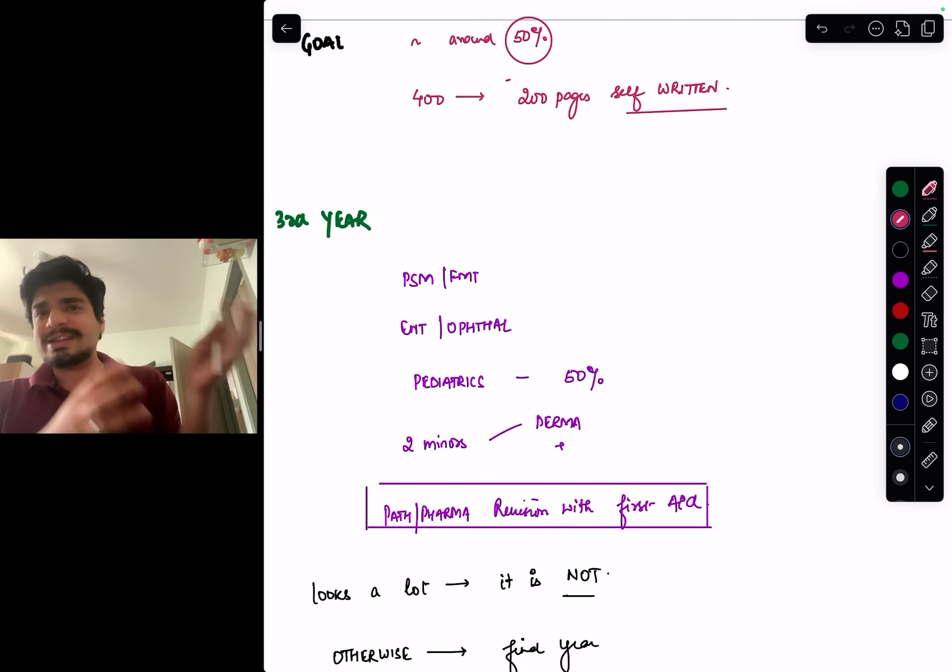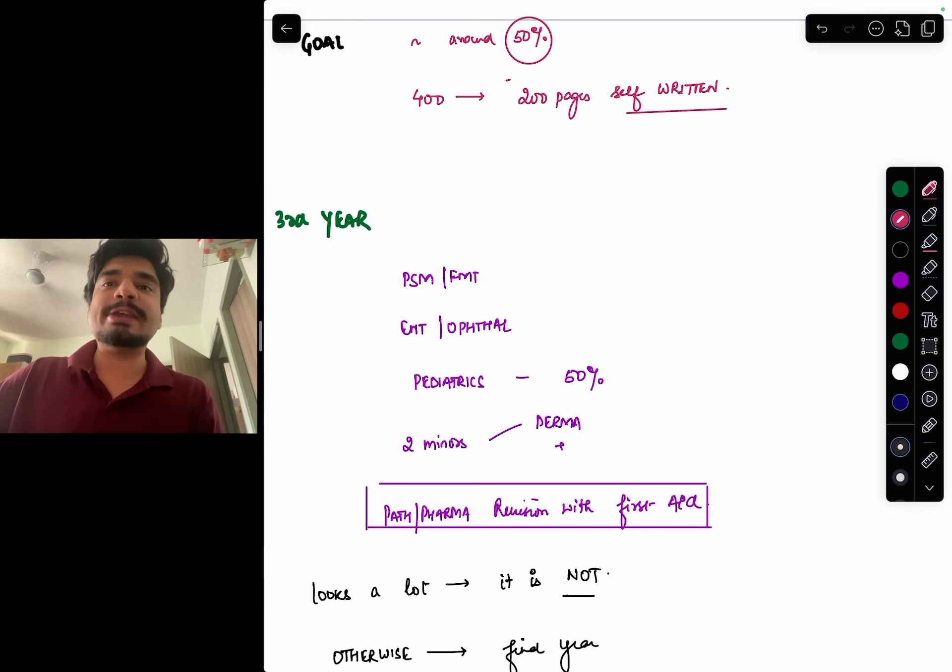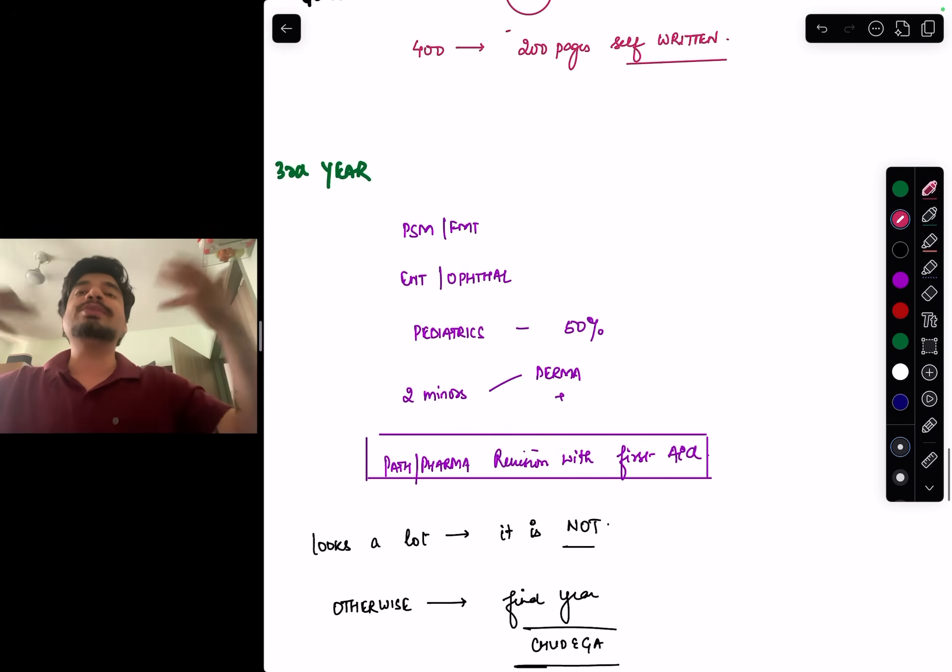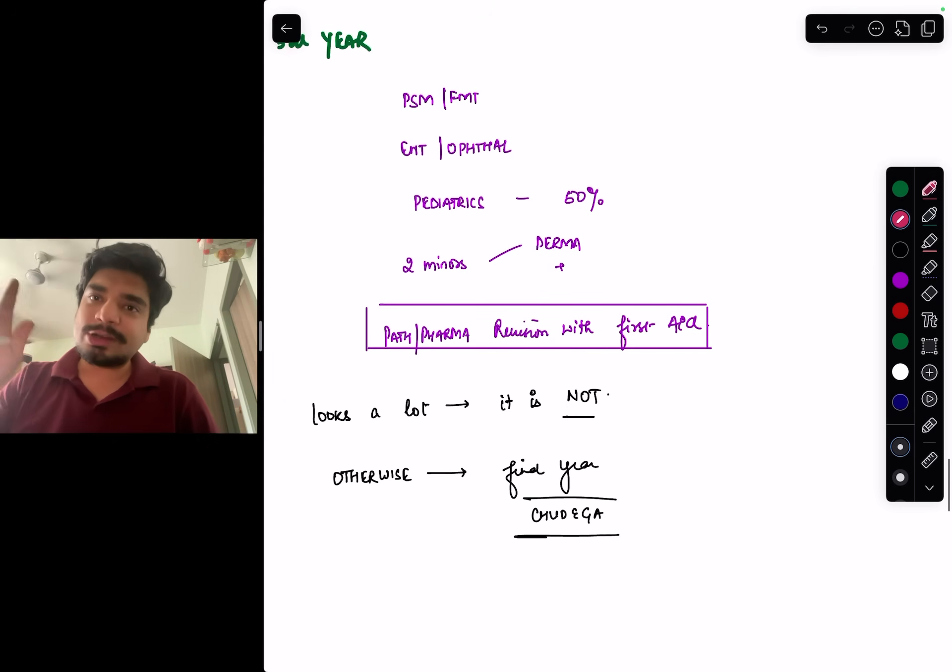So, if you have 400 pages of pediatrics, try to make it 200 pages. If you have 500 pages of ENT, try to make it 200, 250 pages. Around half. Around 50%. Read a topic. Read the previous year questions. Understood the important points. Made shorthand notes. Made notes which have facts, not explanations. And concised it. This is what I mean by concised it. Because you cannot revise 400 pages in the last 10 days. Third year may we have our goal clear. We have to do PSM, FMT, ENT, Ophthal. 50% of pediatrics when pediatrics posting is going. Two minors and path pharma revision.